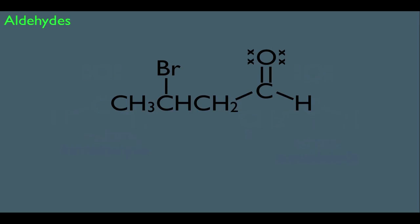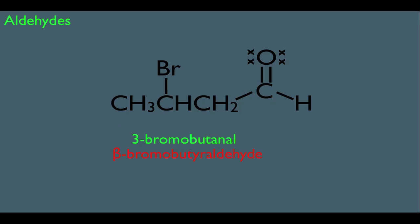Let's look at a substituted aldehyde. The aldehyde takes priority, so the carbonyl would have to be numbered carbon 1. The parent name of this molecule would be butanal. Since it has a bromo on carbon 3, we call this 3-bromobutanal. Using the common name system, it would be beta-bromobutyraldehyde. With the common name system, we use Greek letters instead of numbers. The prefix 'butyr' indicates the molecule is four carbons long, and 'aldehyde' tells us the functional group. The beta-bromo comes from how we label carbons: the alpha carbon is always directly next to the carbonyl, the next is beta, then gamma. The bromine is on the beta carbon.